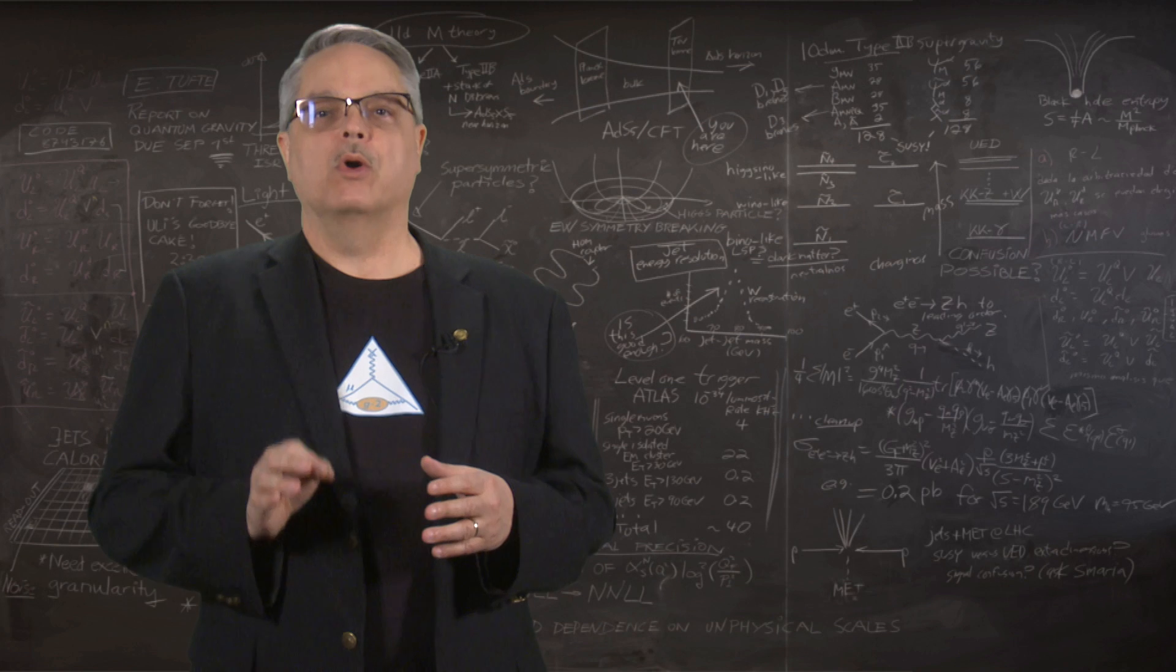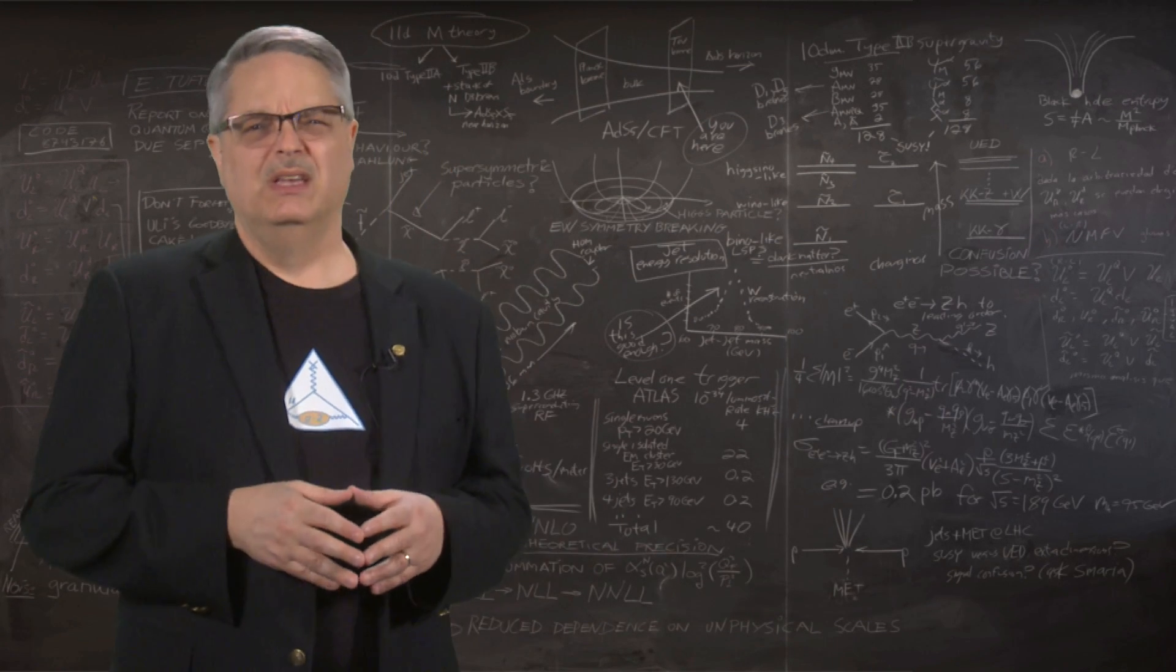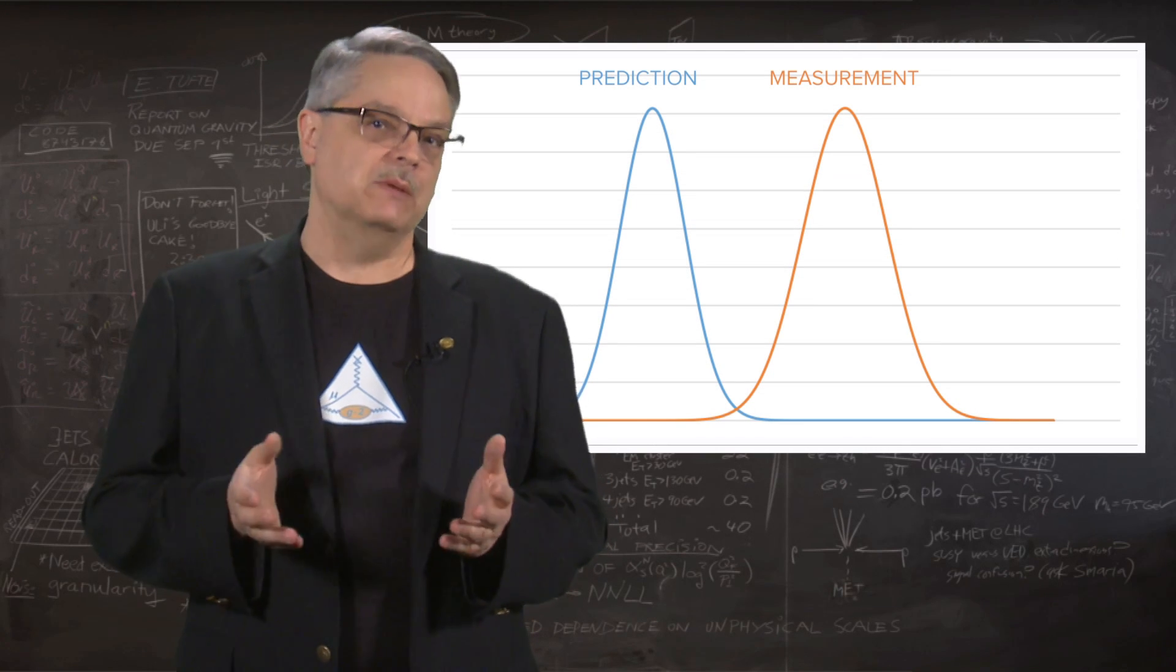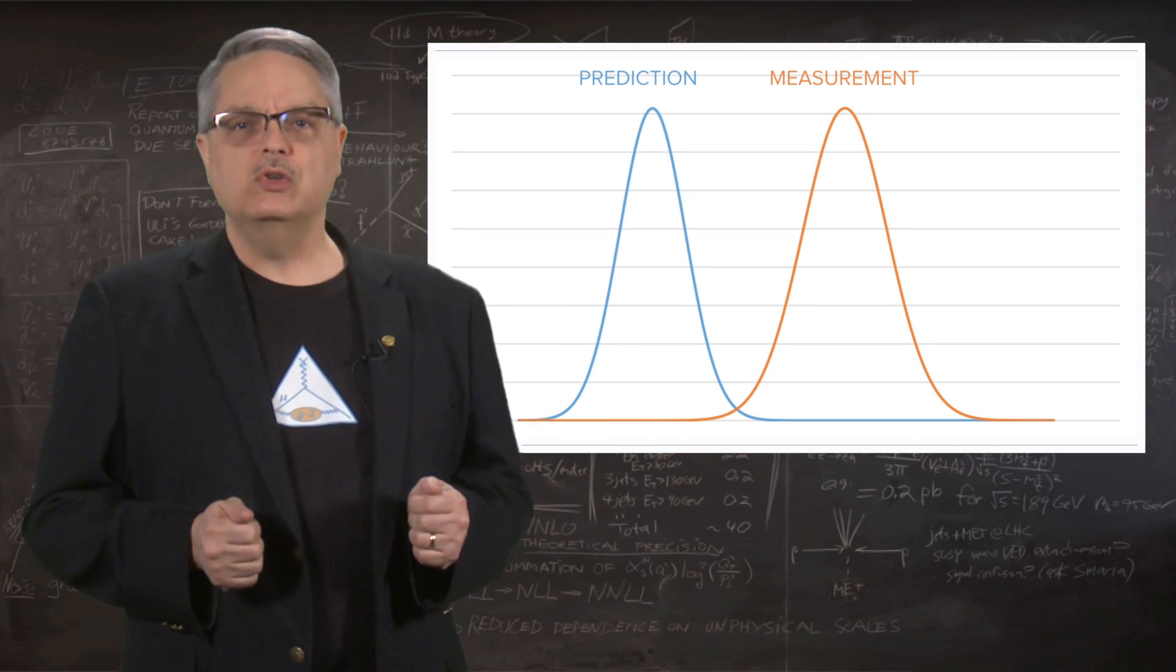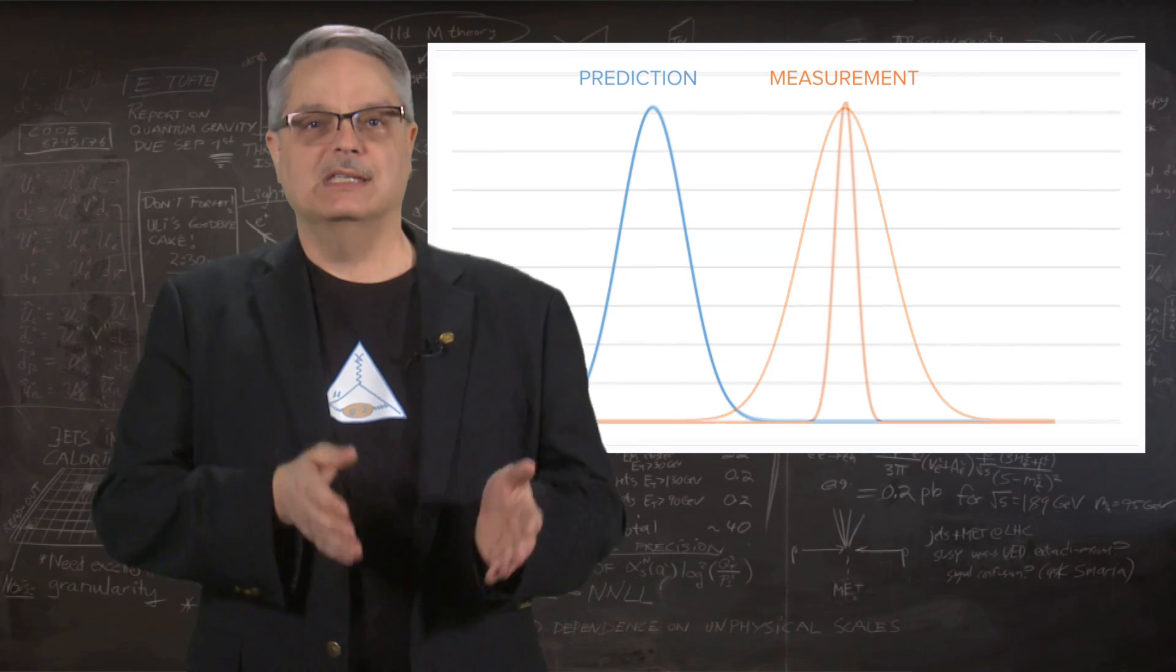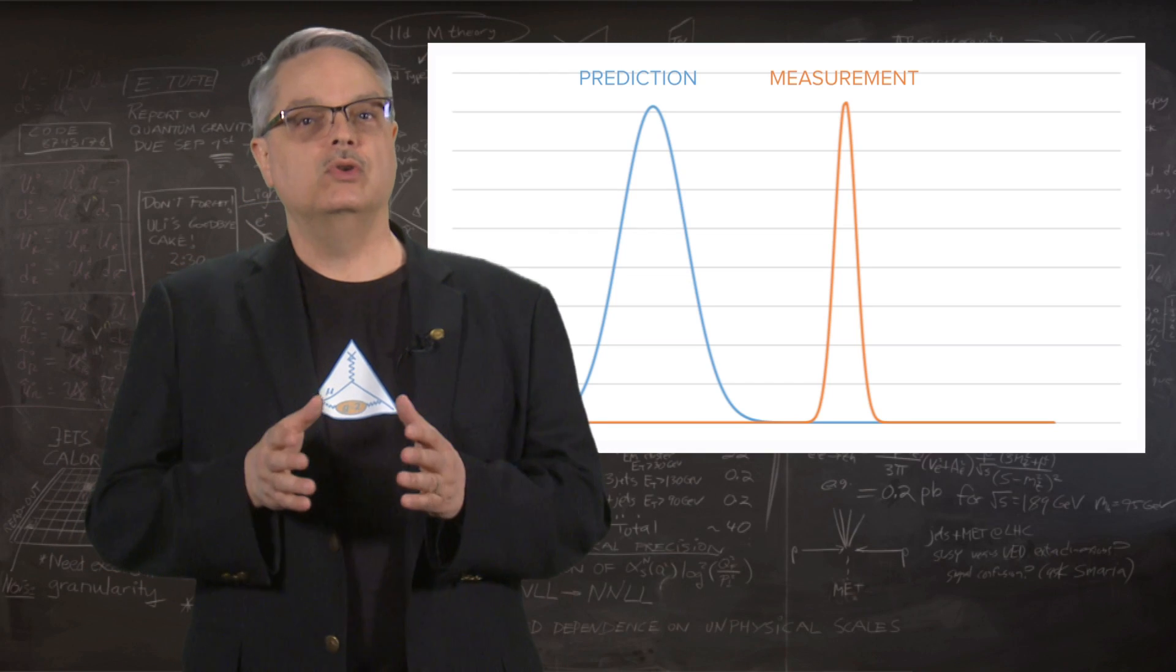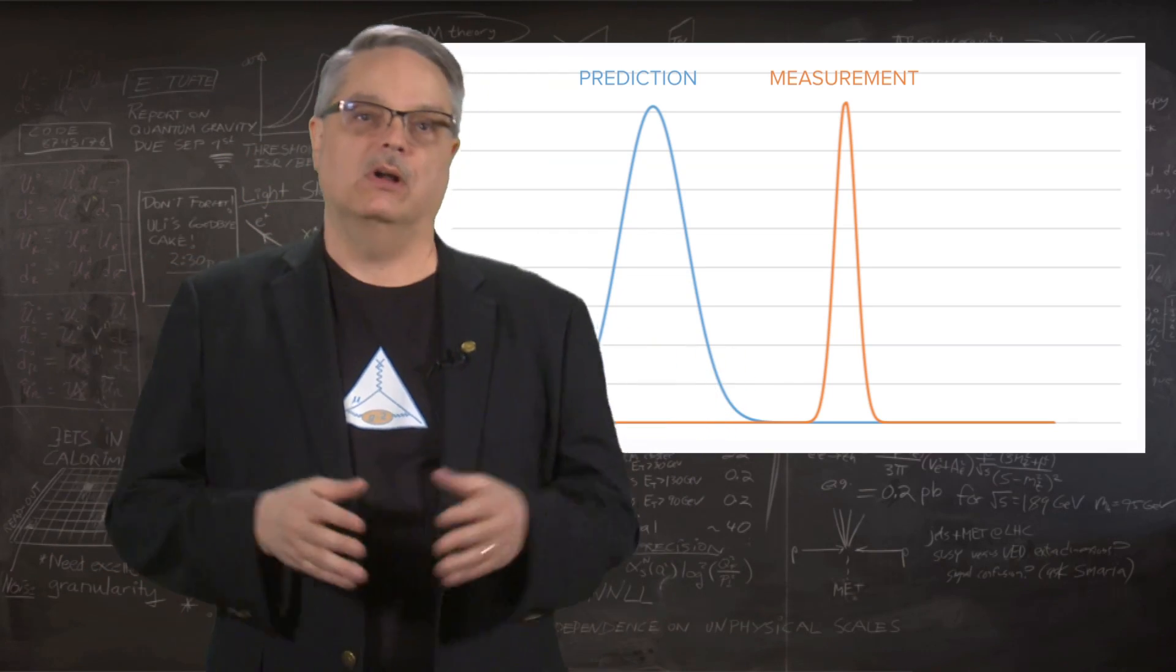What's really important is that the new measurement should be four times more precise. We can get a sense of the impact we can expect to see from the improved precision. If we assume that the theoretical prediction doesn't change, and that the new measurement is the same as the old measurement with smaller uncertainties, what you see is that the two curves now don't overlap at all.